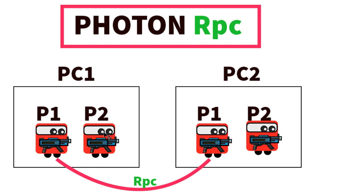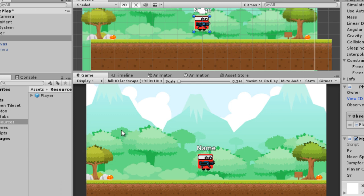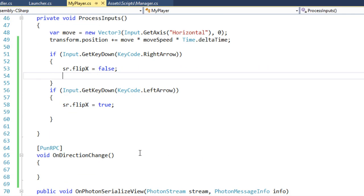On PC2, the corresponding object will have the same Photon View ID, which is 1. When the Photon View with ID 1 calls the RPC, it is going to execute that RPC on all game objects that have a Photon View with the same ID. I hope you understand it — if not, don't worry, you'll get it as we go.